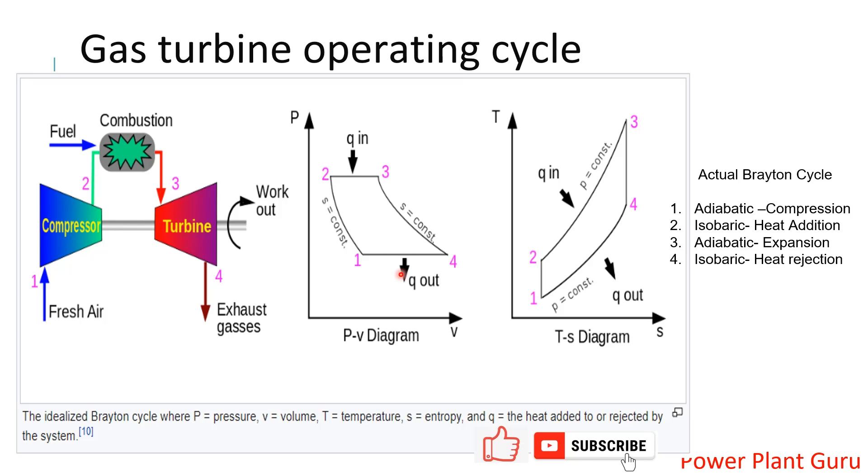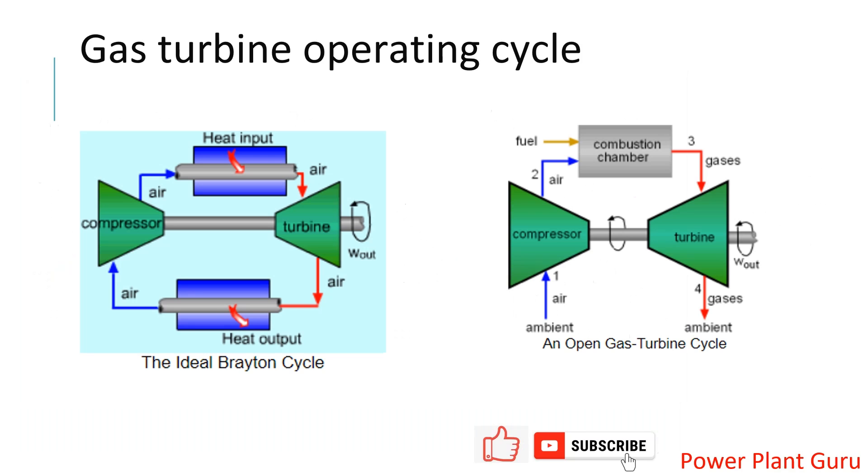We will see in the next page how this is changed to the practical process. This is what we saw in the last slide: heat input and heat output is happening at constant pressure. But see what happens in the actual process—this constant pressure heat rejection is not there.